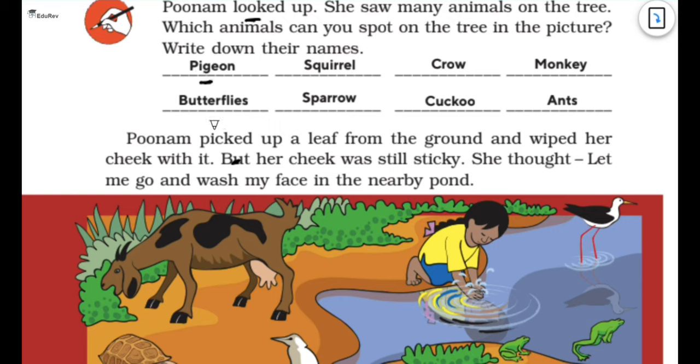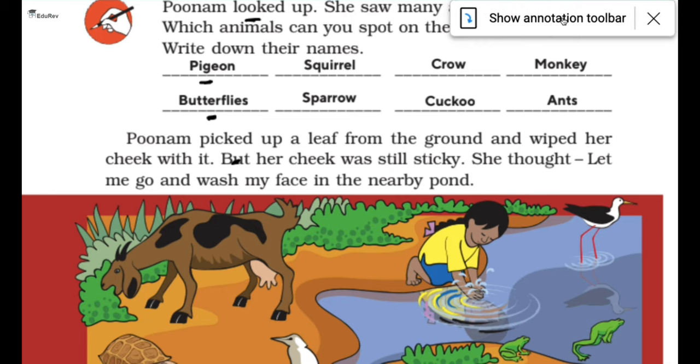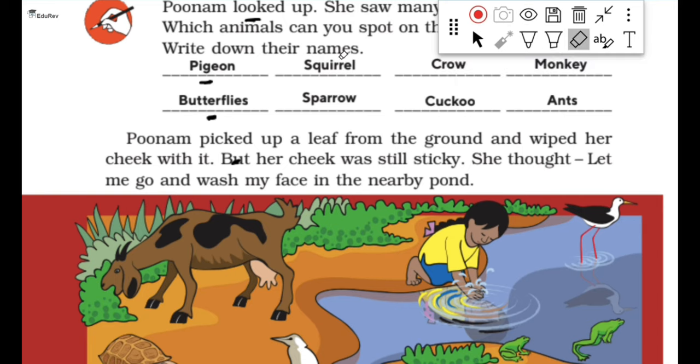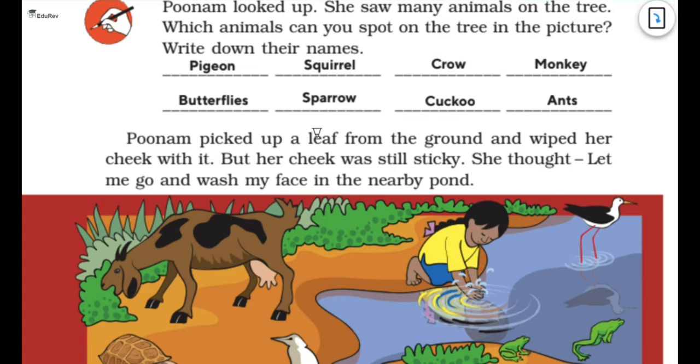So we saw pigeon, butterflies, squirrel and sparrow, crow and cuckoo, monkey and ants. And we also saw I guess there was parrot as well. So let's move further.